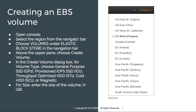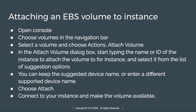Then we create a volume. In the create volume dialog, we choose the type of volume we require — such as general purpose SSDs, provisioned IOPS SSDs (IO1), or throughput optimized SSDs. In our practical classes we will discuss in detail how to create an EBS volume.